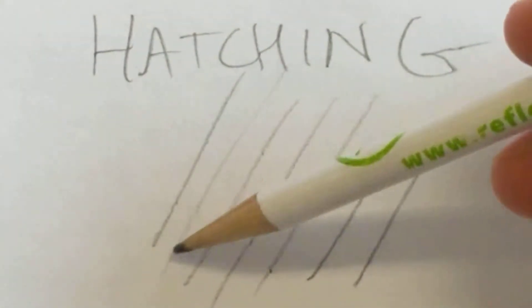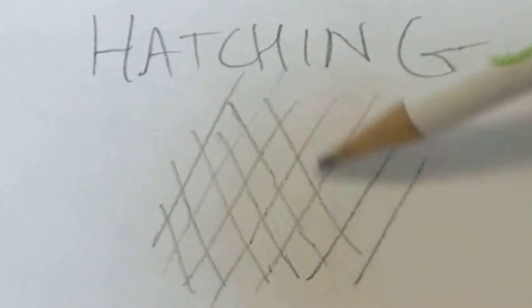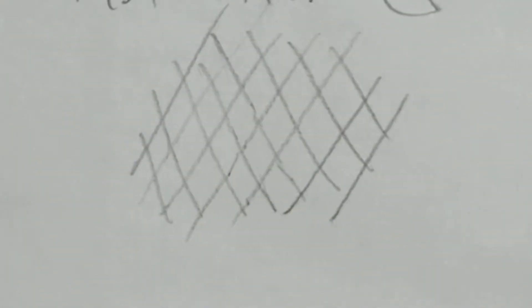Cross-hatching is crossing those lines, and by doing this we can create shadows without having to blend with our finger and without having to press harder and lighter. It's a lot easier to control.